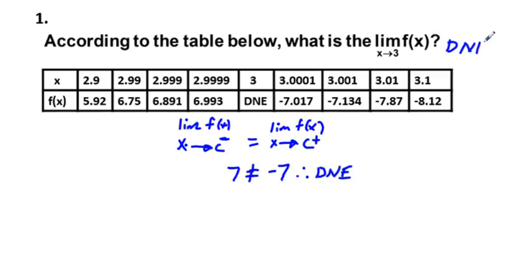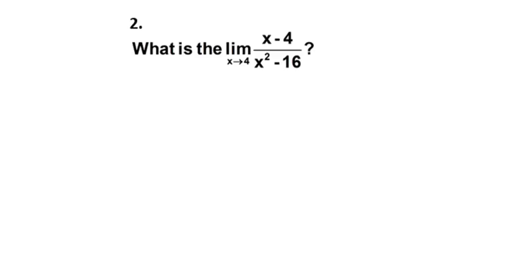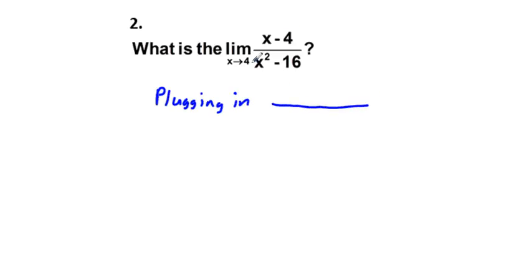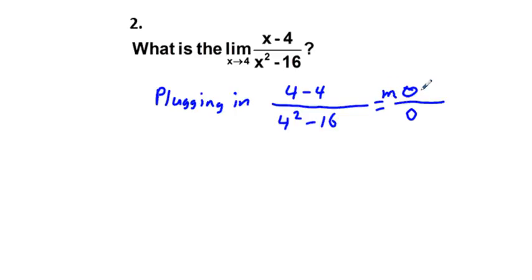Problem two: what is the limit as x approaches 4 of (x minus 4) over (x squared minus 16)? The first strategy is plugging in. Substituting x equals 4 gives four minus four in the numerator and four squared minus sixteen in the denominator, which is zero over zero — the indeterminate form — so more work is required. We'll factor.